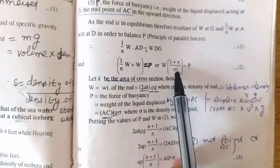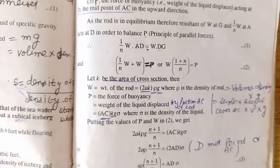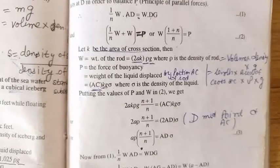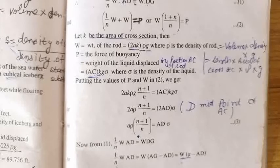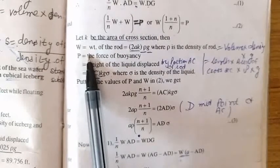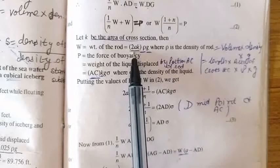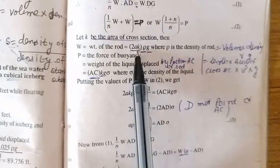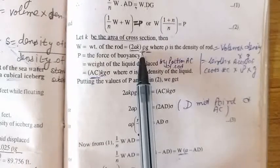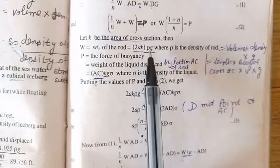We have obtained these two equations. Now we need to find the length AD and apply the condition of equilibrium: weight of the body equals weight of liquid displaced. The weight of the rod is volume times density times g. Volume is length times cross-sectional area, so 2a × k. Density of the rod is rho, giving weight W = 2a × k × rho × g.